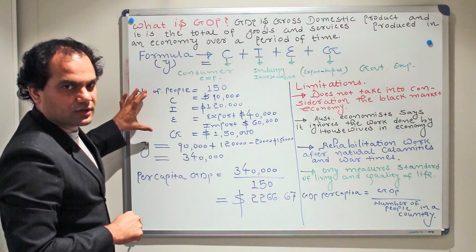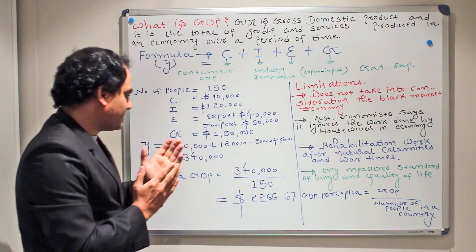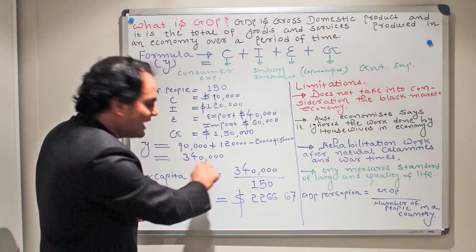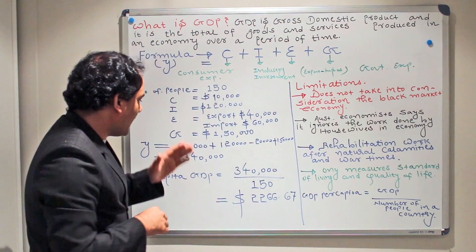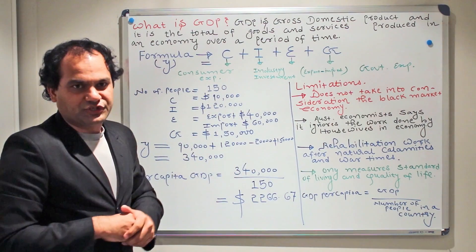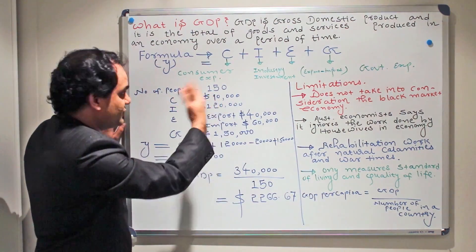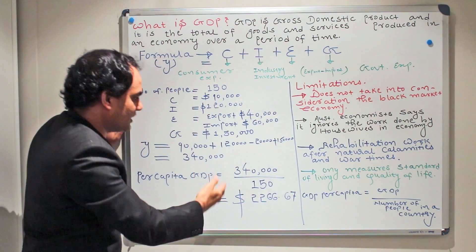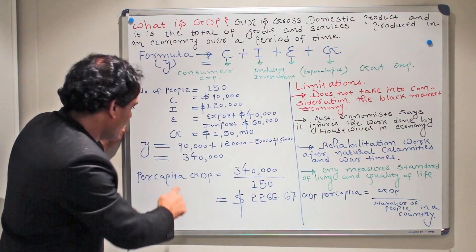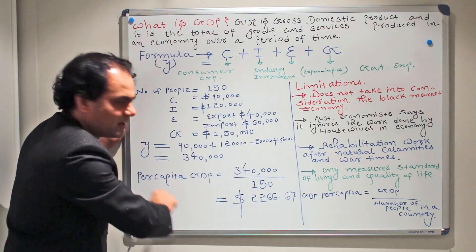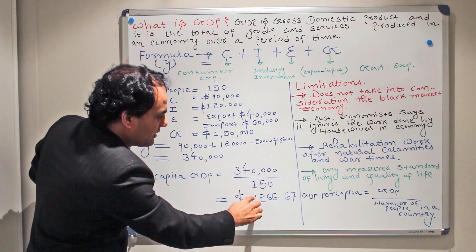Now this is the GDP of the economy. What is per capita GDP? Per capita GDP is something that we get once we divide the GDP figure with the number of people residing in a country or living in an economy. When we divide $340,000 by 150, which is the number of the population, we will get a figure of $2,266.67. This is the per capita GDP.